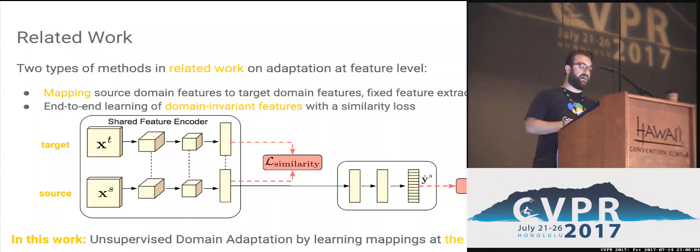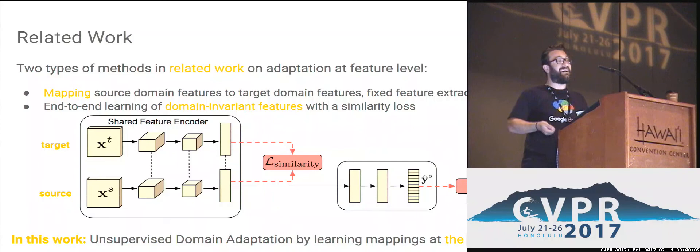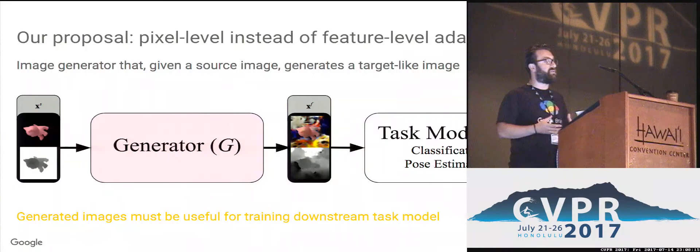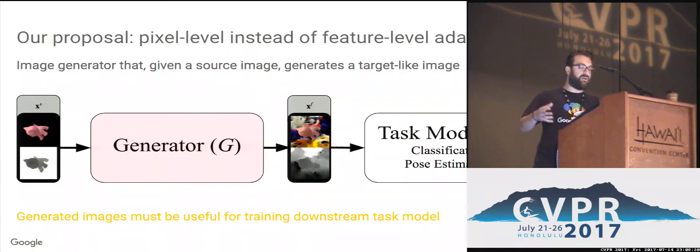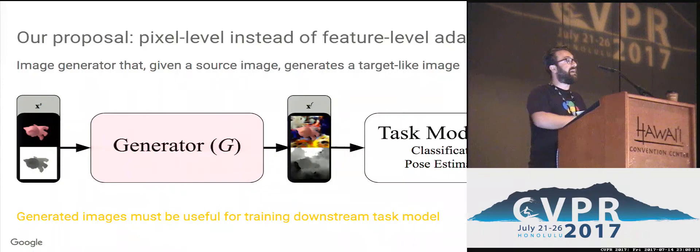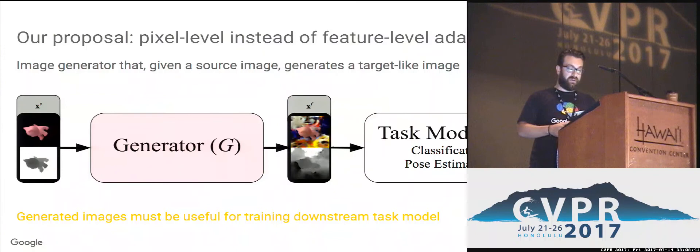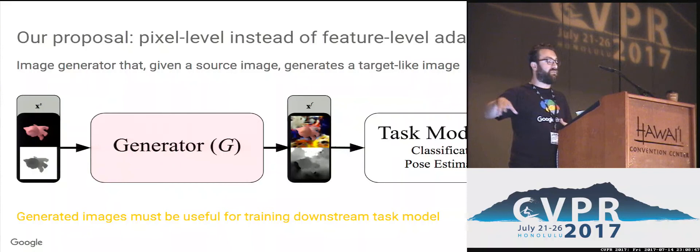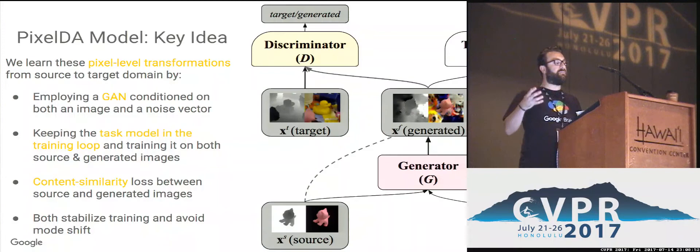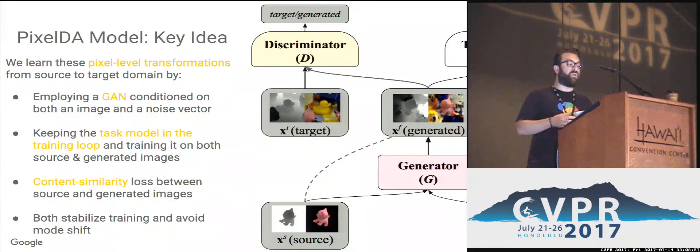In this work we propose a new type of unsupervised domain adaptation method in which we learn the mapping from source to target domain at the pixel level. What we propose in essence is a generator that, given a source image, is able to generate an image that looks like it came from the target domain — from the real world. For the cropped linemode example, this would amount to passing a rendered toy cat in a specific pose to the generator; the generator would make it look more realistic, still retain the object category and pose, which is particularly important because the generated images must be useful for training the downstream task model for classification and pose estimation.